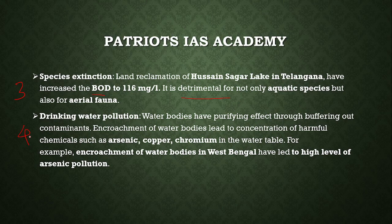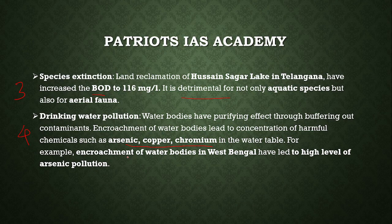Fourth, drinking water pollution. Water bodies have a purifying effect through buffering out contaminants. Encroachment of water bodies leads to concentration of harmful chemicals such as arsenic, copper, and chromium in the water table. For example, encroachment of water bodies in West Bengal has led to high levels of arsenic pollution.